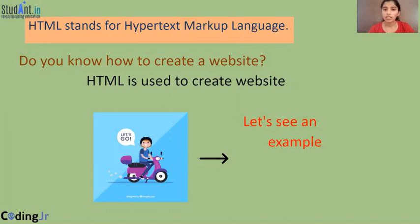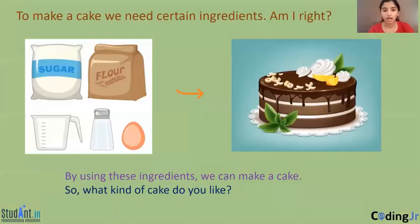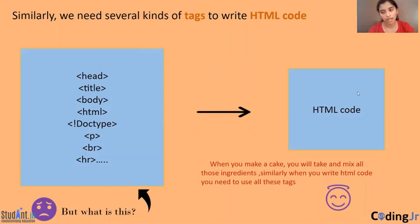Let us see how it is being created. Let us take an example of making a cake. So what are the ingredients needed to make a cake? We need sugar, flour, milk, salt, egg, and so on. Same way, an HTML code will need several kinds of tags, and each tag has a specific task to do. And all these tags will help us to make an HTML code.